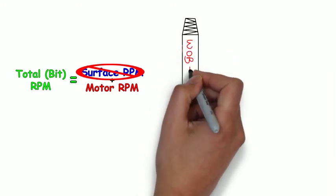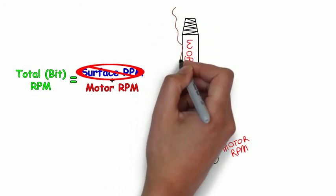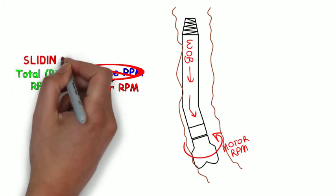Once the assembly is oriented in the right direction, weight is applied and the bit turns only by the power of the motor. Drilling in this mode is called sliding because the entire drill string has to slide against the borehole wall.